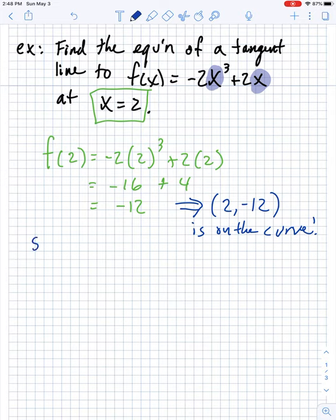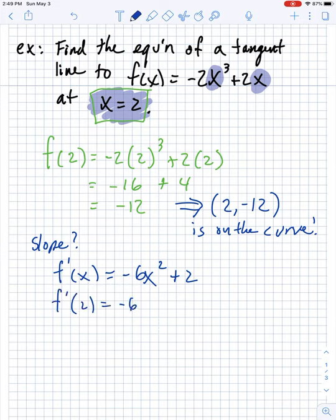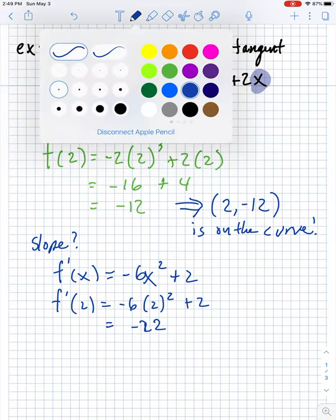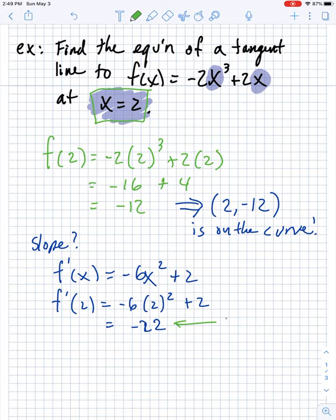Now, let's use a derivative to find the slope of that tangent. So the derivative, the old pop and drop, that's negative 6x squared plus 2. Now, we want to know the slope of the tangent at x equals 2, this guy right here. So we need to feed 2 into our derivative function to figure out what the slope is going to be at that point. 2 squared is 4 times negative 6 is negative 24. So that's negative 22. So once again, this is the slope of the tangent.